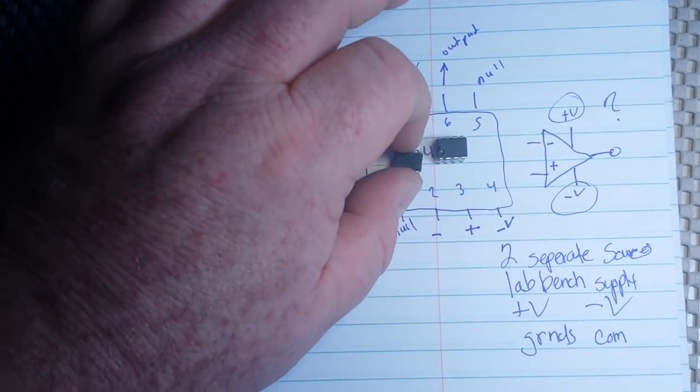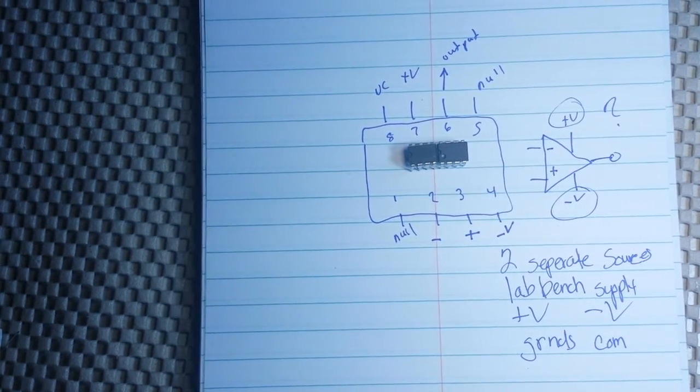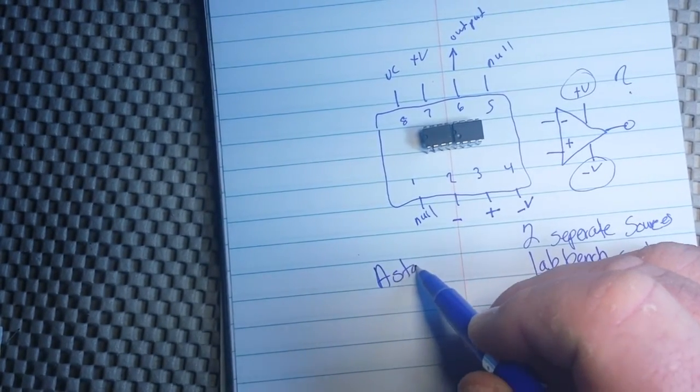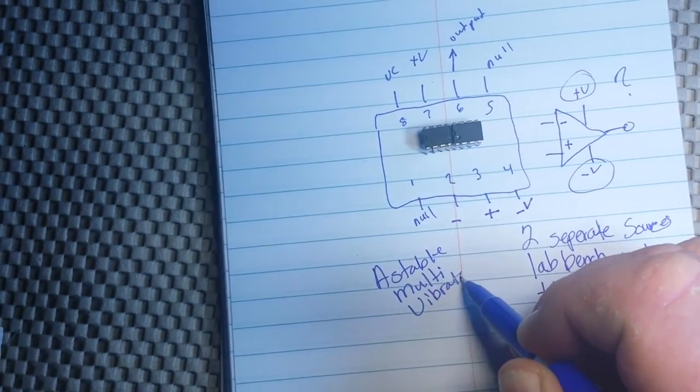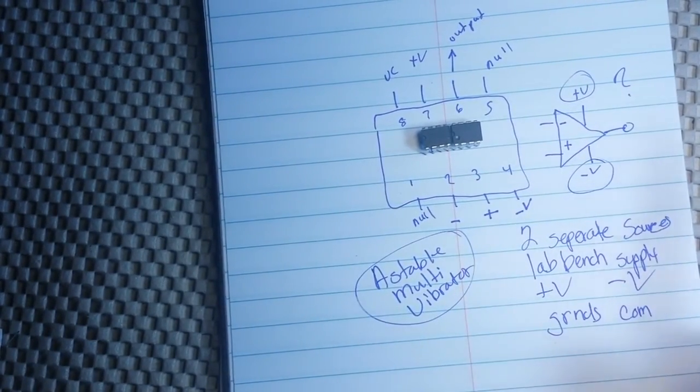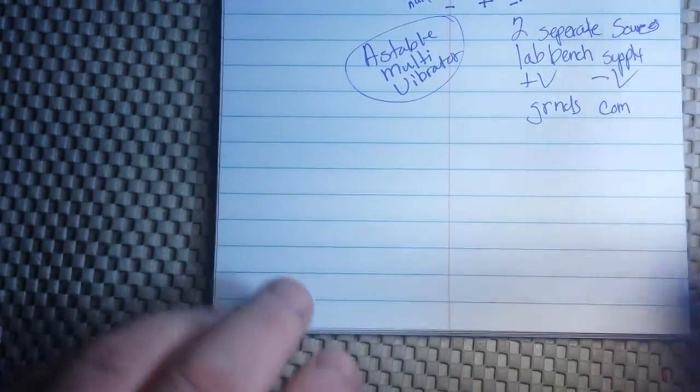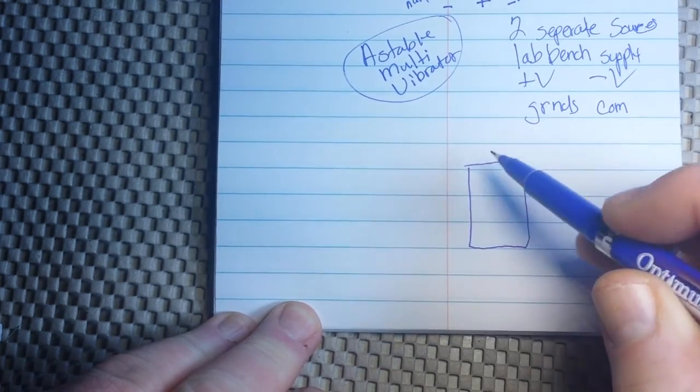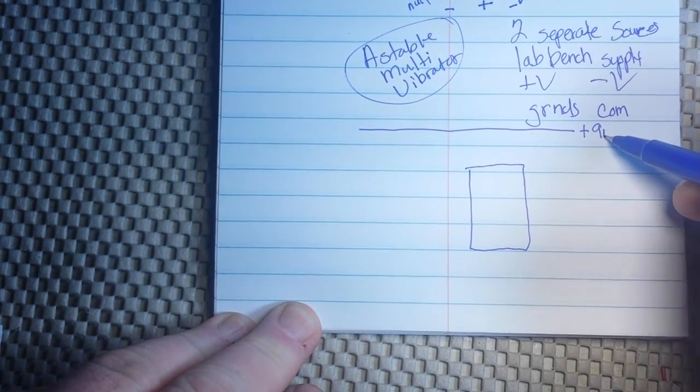It's our old friend to the rescue. The triple five timer. The triple nickel. And if you go back to that video that I mentioned before, there's a link down there to it. We can set that 555 timer up in one of its modes called the astable multivibrator.